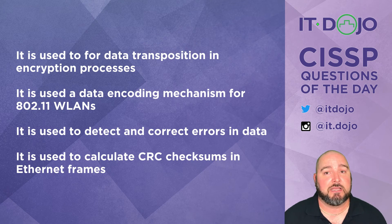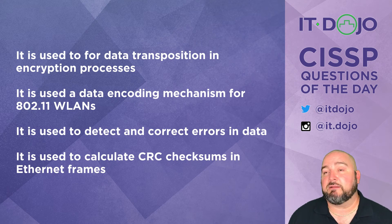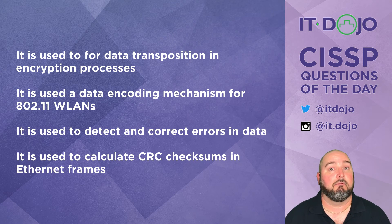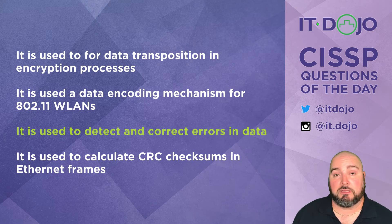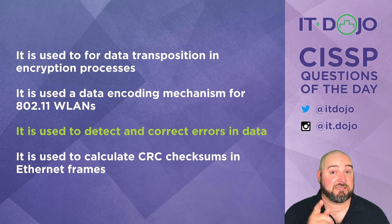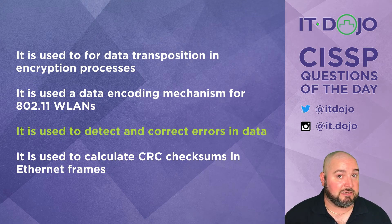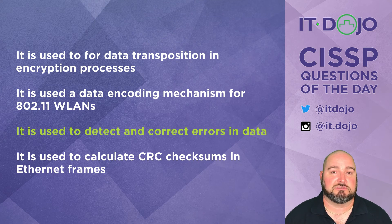Is a Hamming code used for data transposition and encryption processes? No, that's a distractor I made up. Is it a data encoding mechanism for 802.11 wireless LANs? Also made up. The correct answer is that it's used to detect and correct errors in data — specifically in things like RAID, adding parity data so you can detect whether an error exists, locate where it is, and actually correct it. Hamming code is really cool stuff, and there are videos below if you want to dig deeper.